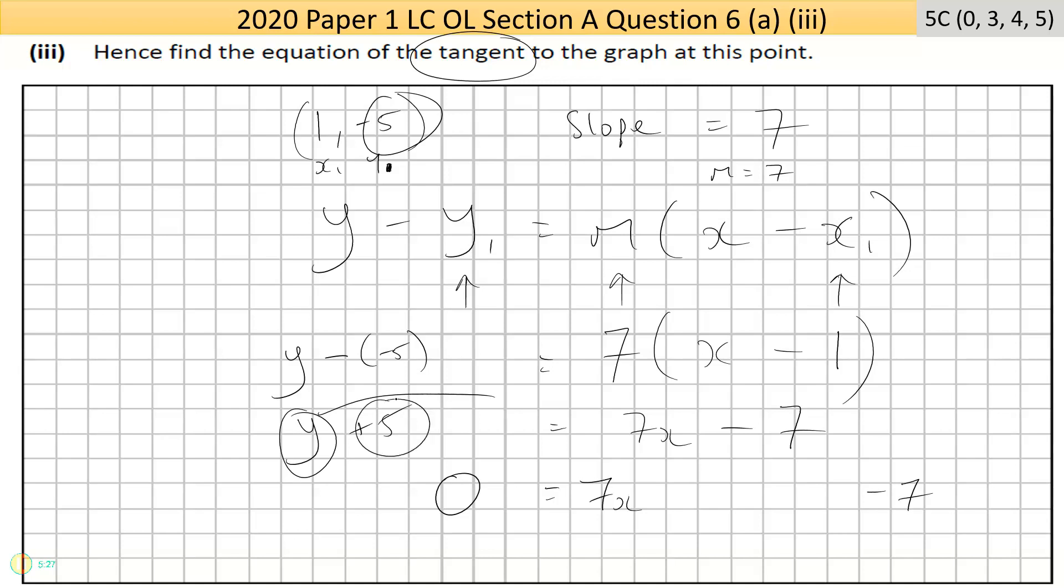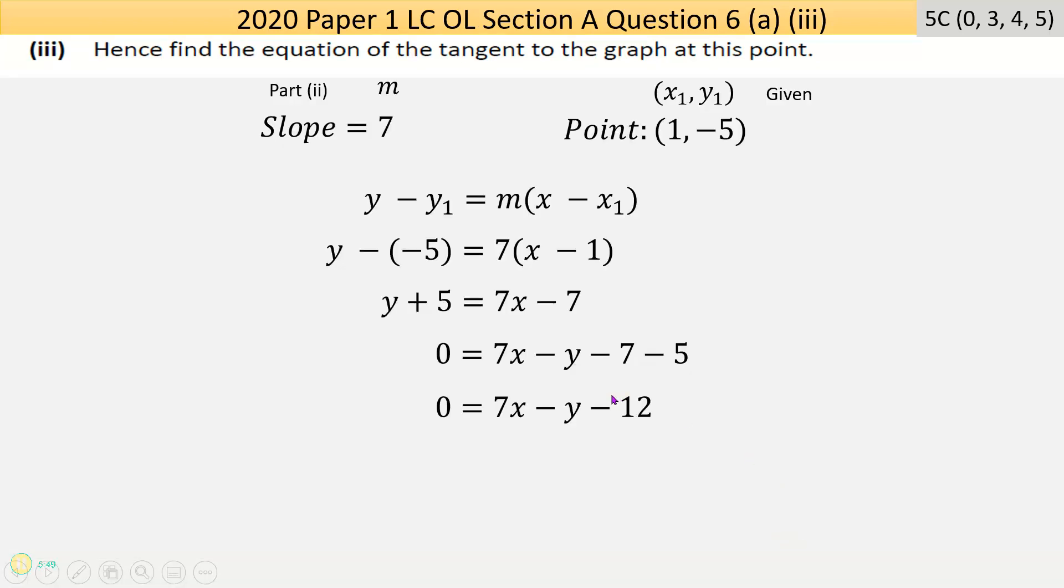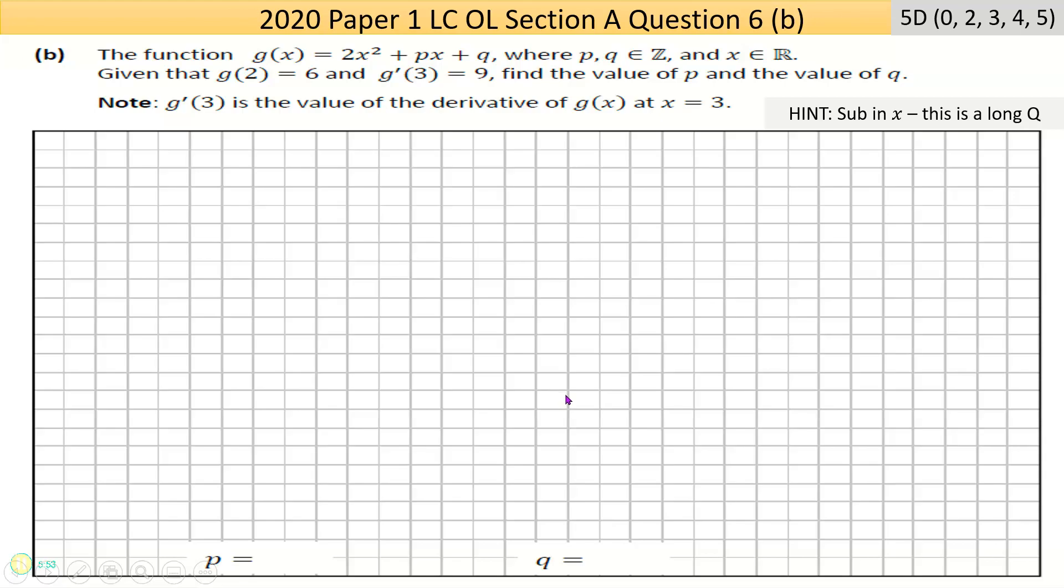I need to move the y across and the 5 across. Both of these are being added on the left side, so they'll become subtracted on the far side. That's my answer, but tidy up that last bit: x is positive, minus y, then -5 - 7 is -12. That's it, that's the equation of the tangent touching the graph. That should be the answer I have here.